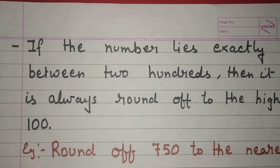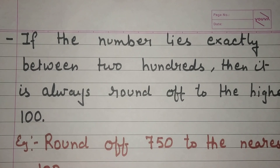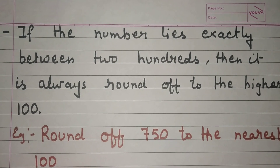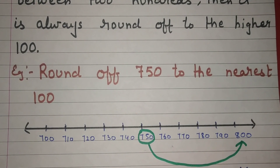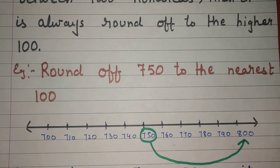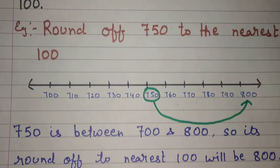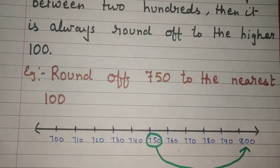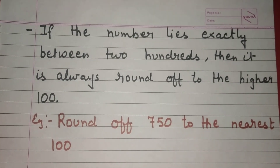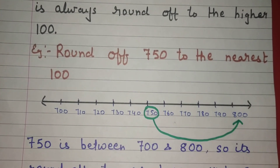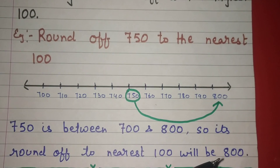Now, if a number lies exactly between two multiples of 100, then it is always rounded off to the higher 100. Let's see with an example: round off 750 to the nearest 100. Now 750 is exactly between 700 and 800. So 750 rounded off to the nearest 100 is 800.